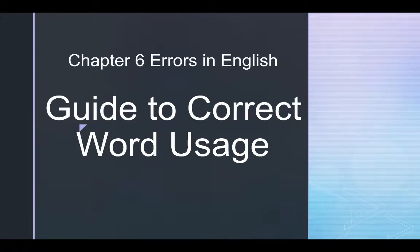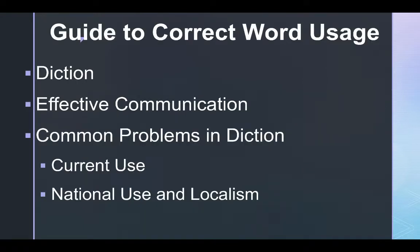This is a brief review of Chapter 6, Errors in English: Guide to Correct Word Usage. When it comes to correct word usage, the first thing you have to think about is diction. Diction is another way of saying how your word choices affect the way your ideas are expressed.